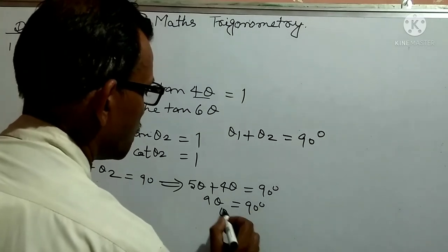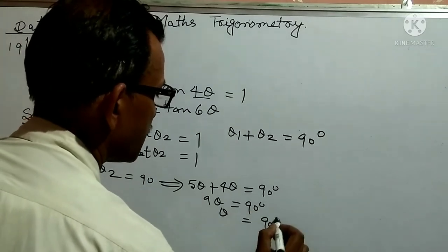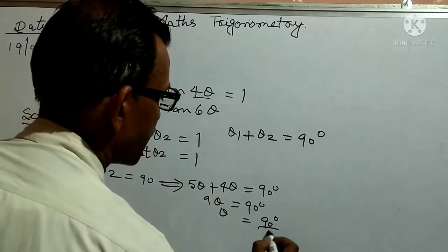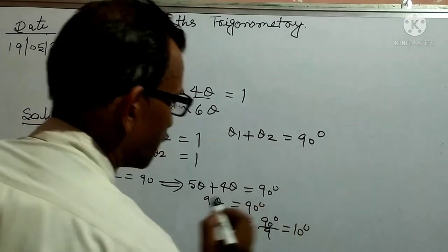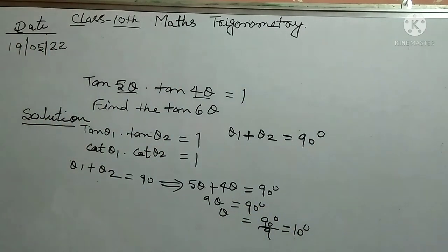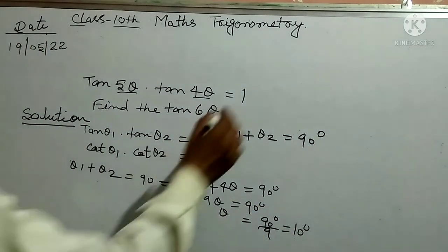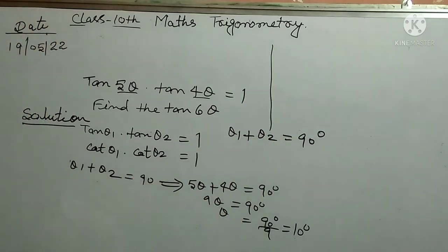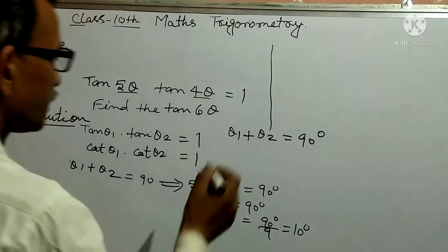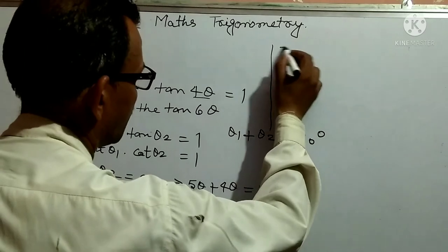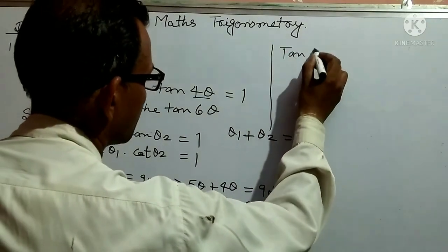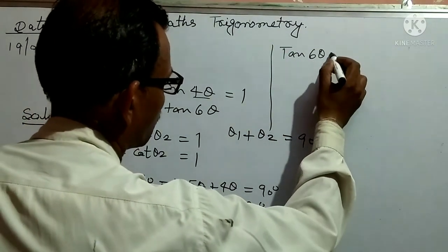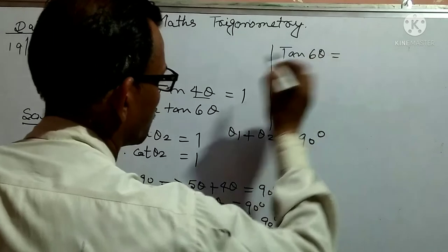Therefore θ = 90/9 = 10 degrees. Now find tan(6θ): tan(6θ) is equal to...